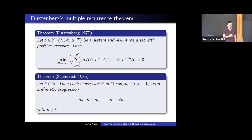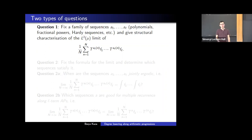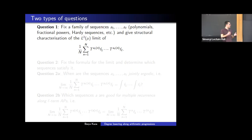There are several types of questions we can ask about ergodic averages, and basically two ways to approach the problem. First, we can fix a family of sequences — this can be integral polynomials, fractional powers, Hardy sequences, or sequences involving primes — and for this fixed family we want to give some structural characterization of the L² limit. We start with sequences and want to give some characterization.